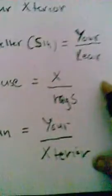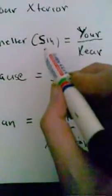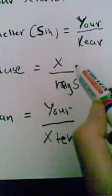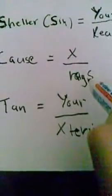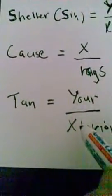Okay, in other words, what you can do is remember: shelter sin, shelter your rear, cause x-rays, tan your exterior.